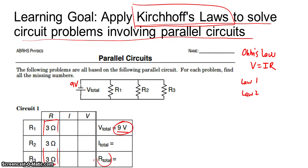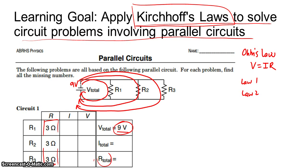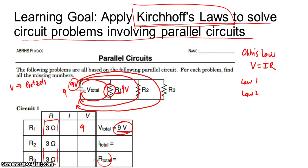Another way to start is to say this is 9 volts, and there are three paths to get back to the battery: path 1, path 2, and path 3. Visualize yourself walking along path 1 — you pick up 9 pretzels at the battery (9 joules per coulomb), and the only resistor you pass is R1. So if I picked up 9 pretzels at the battery, I'd have to drop off all 9 at R1. Because this is a parallel circuit, I'm going to drop off 9 volts at R1.